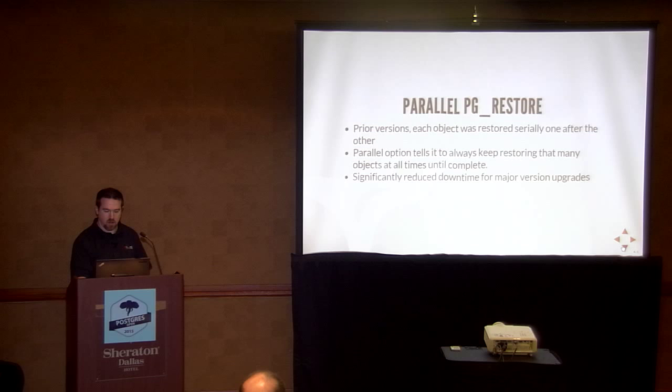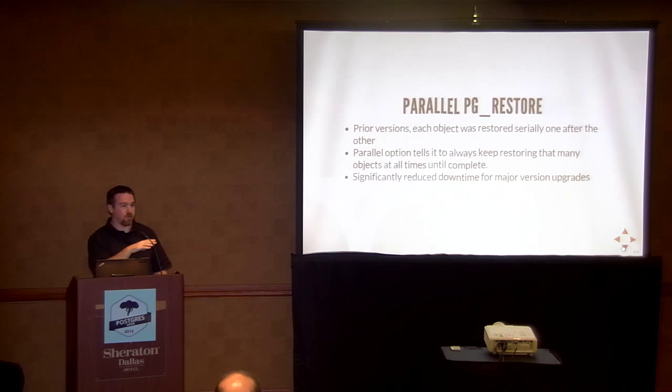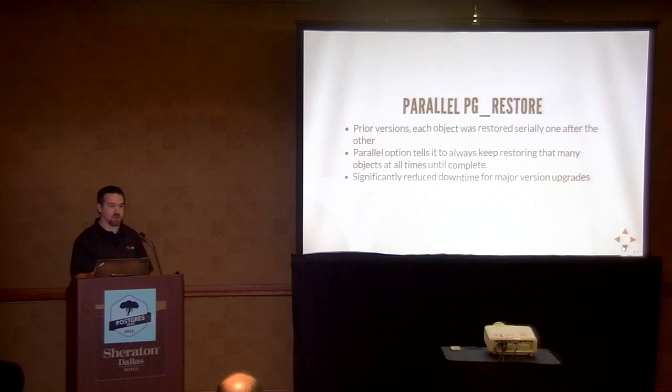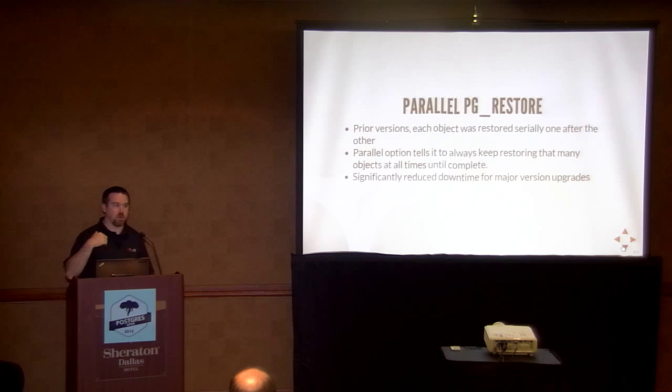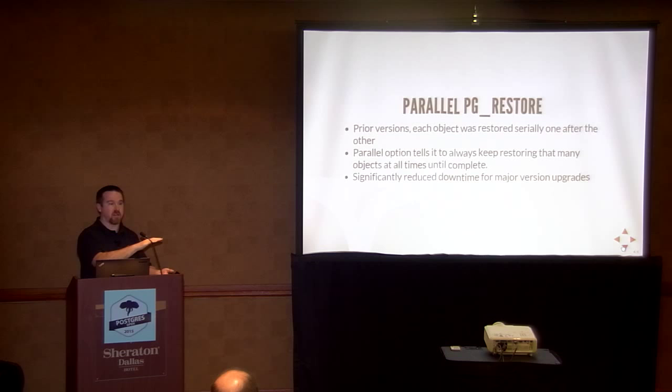Another big feature in 8.4 was the parallel option in pg_restore. Before pg_upgrade existed, upgrades were a big pain because the only way to do it was a dump and restore. This parallel restore option made the second step significantly faster if your I/O could support it. It's parallel in that if you tell it you want 10 objects restoring at a time, as soon as one finishes it grabs another — so it's always doing 10 at a time. It's a really efficient parallel restore.